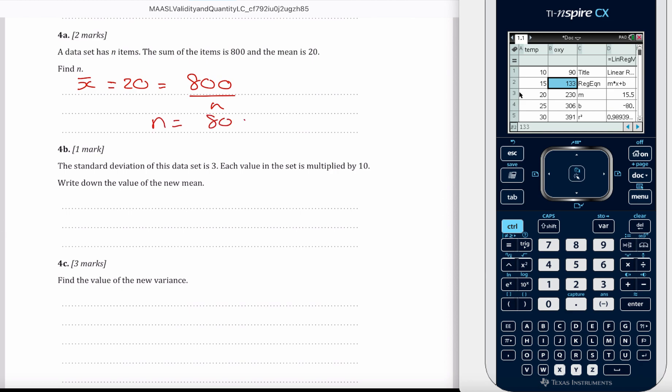So n is equal to 800 divided by 20. Many of you are going to divide by 10. So it's half of 80, n equals 40.